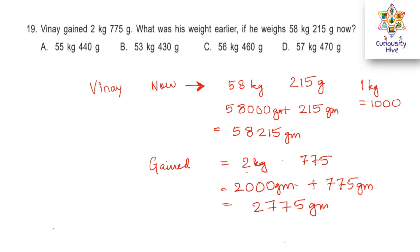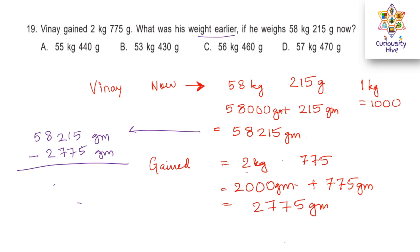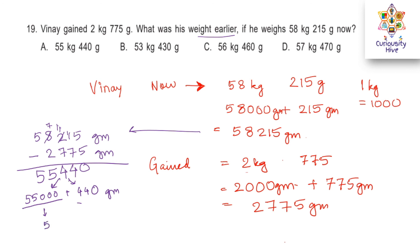His earlier weight was 58,215 grams minus 2,775 grams. Subtracting: 5 minus 5 is 0; 11 minus 7 is 4; 11 minus 7 is 4 again; 7 minus 2 is 5; and 5 comes down. So 55,440 grams. Writing this as 55,000 plus 440 grams: 55,000 is 55 kilograms and 440 grams. This matches option A.